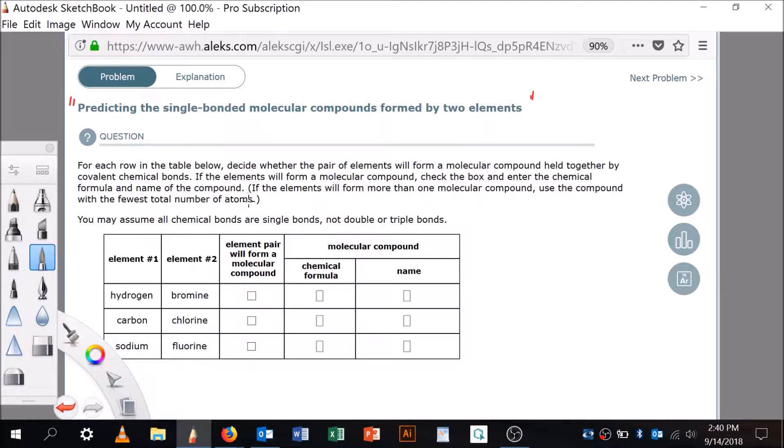And so the question stem, of course your question is going to have different elements in it, but the question stem is going to be the same. For each row in the table below, decide whether the pair of elements will form a molecular compound held together by covalent bonds. If the elements will form a molecular compound, check the box and enter the chemical formula and the name.